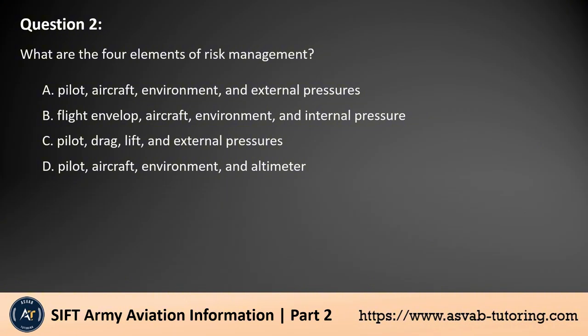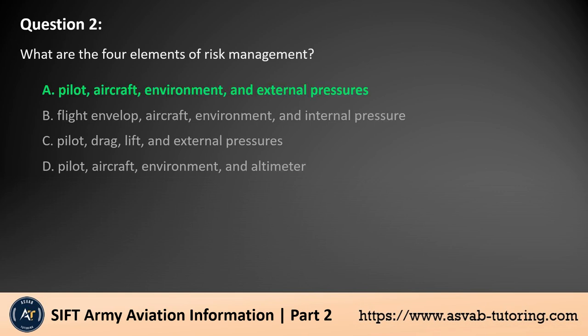D. Pilot, aircraft, environment, and altimeter. The answer is A. The four elements of risk management are pilot, aircraft, environment, and external pressures. These represent critical factors in flight safety. The pilot's skills and condition, aircraft performance, environmental conditions like weather, and external pressures — for example, time constraints or mission demands — all influence decision-making and risk during a flight. The other options contain incorrect or irrelevant elements like drag, lift, or altimeter.